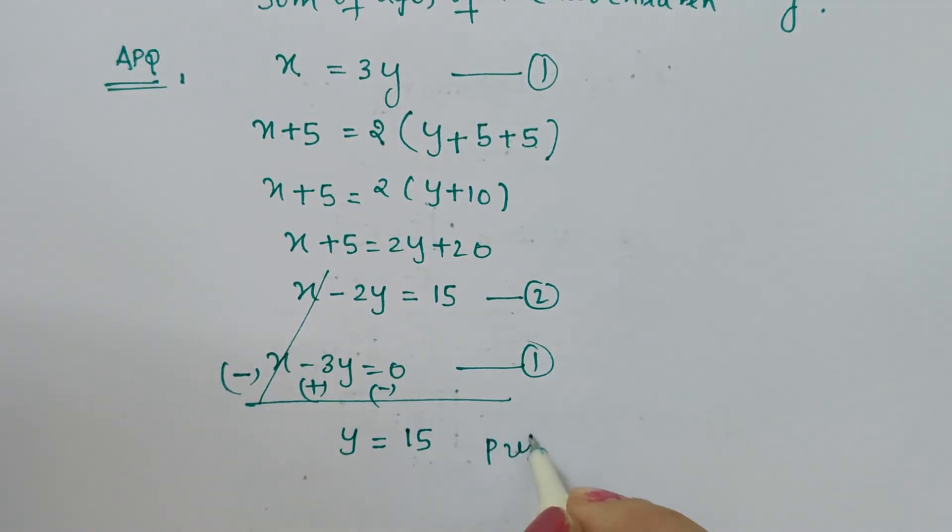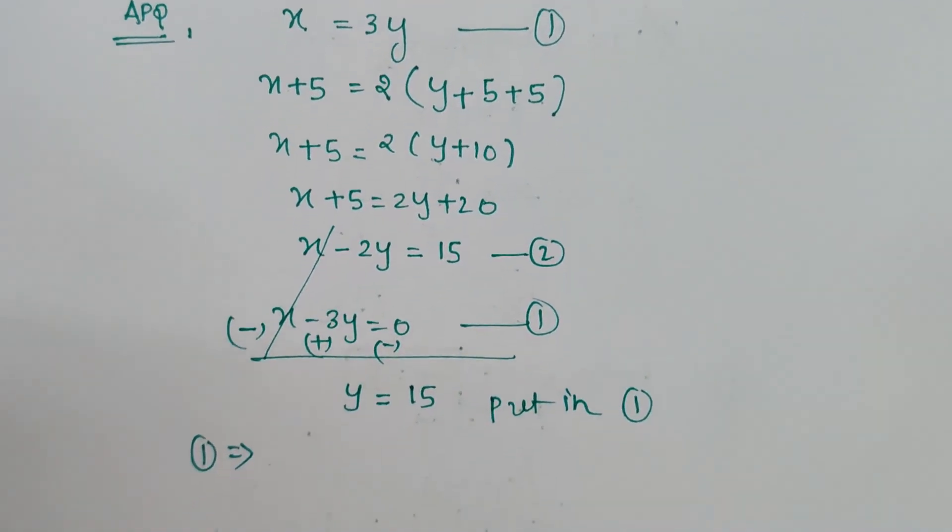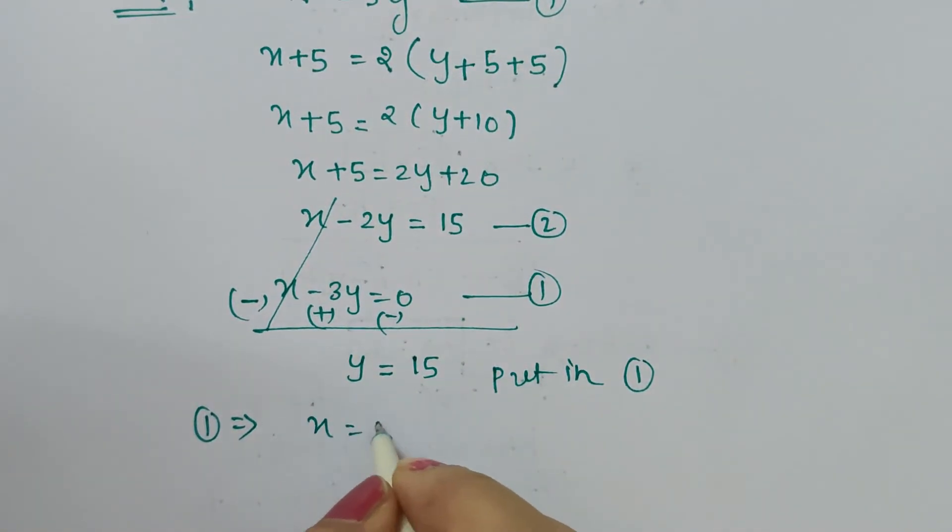Now simply put this value of y in equation 1. What was equation 1? Equation 1 was x = 3y. So x = 3 × 15. What does it give? 3 times 15 is 45.